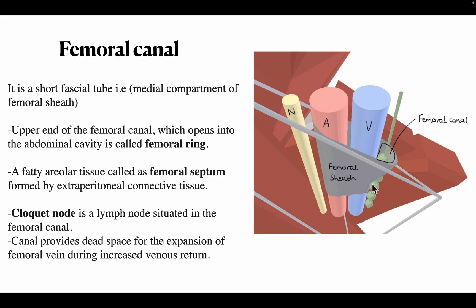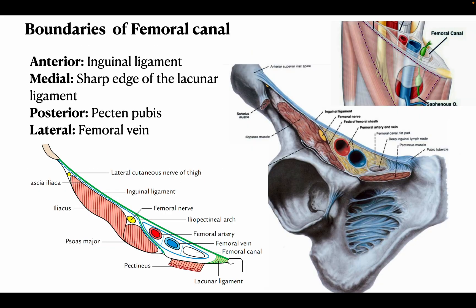The boundaries of the femoral canal are: anteriorly — the inguinal ligament; medially — the sharp edge of the lacunar ligament; posteriorly — the pecten pubis and pectineus muscle; laterally — the femoral vein with the septum. In the diagrams you can see the lacunar ligament, inguinal ligament, pectineus muscle, and pecten pubis.